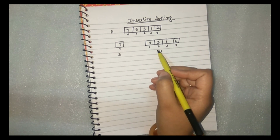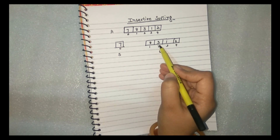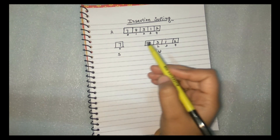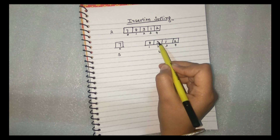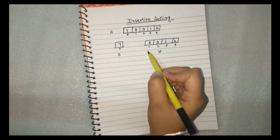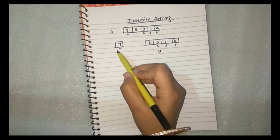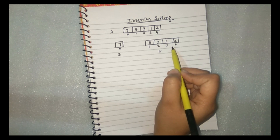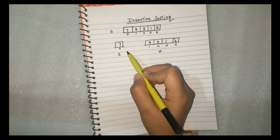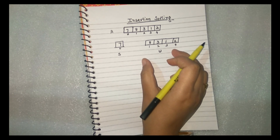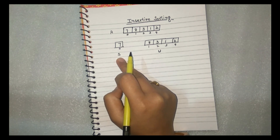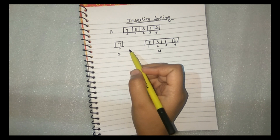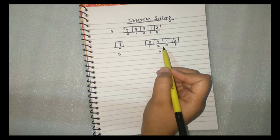In each pass, one element from the unsorted list is inserted in the correct position of the sorted list. So elements 8, 3, 1, and 2 are picked one by one. As a result, the unsorted list shrinks after every pass, and at the end of the last pass all elements will take their correct positions in the sorted list.